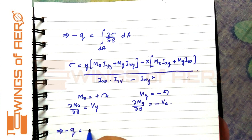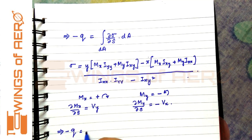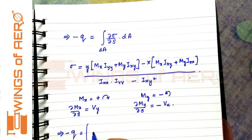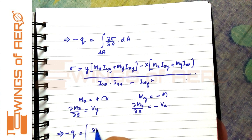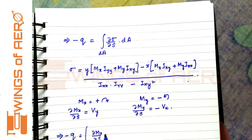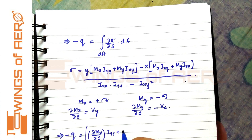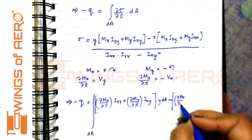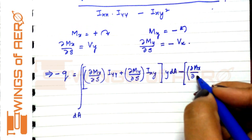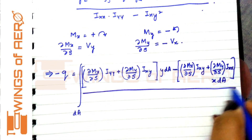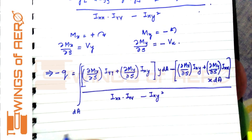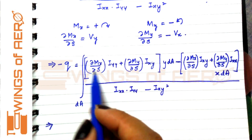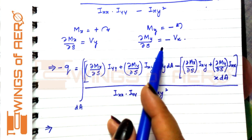We are now going to substitute this into the equation to get minus Q. Let's substitute: in place of ∂Mx/∂s we put Vy, and in place of ∂My/∂s we put minus Vx, and we get the resulting expression.